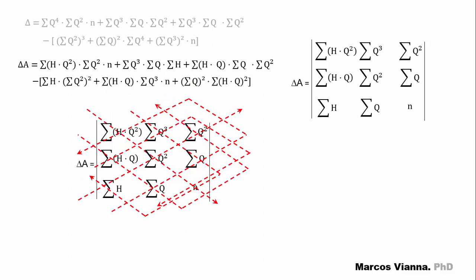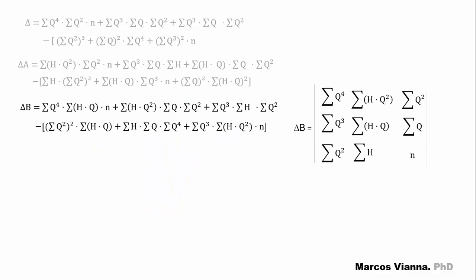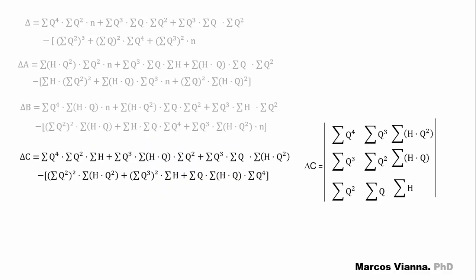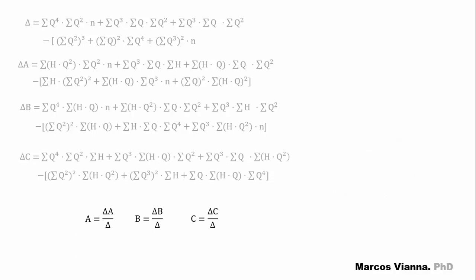Now, we can do the same to the determinants delta a, delta b, and delta c. The values of a, b, and c are found through these ratios.